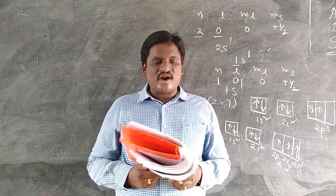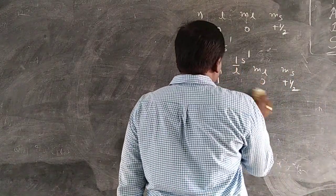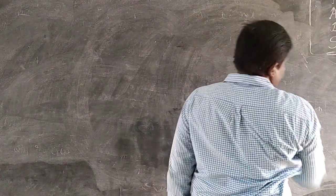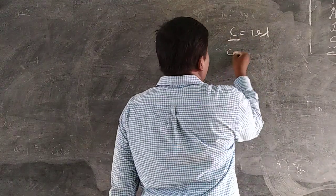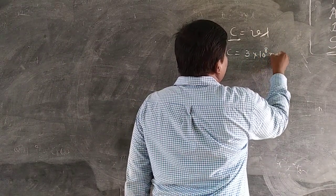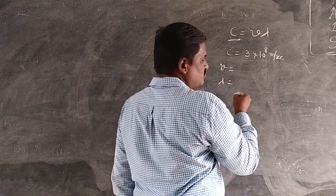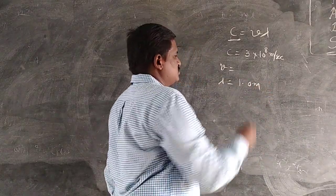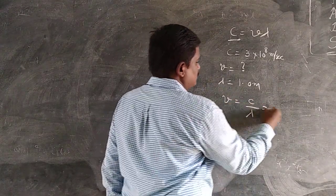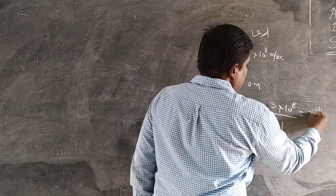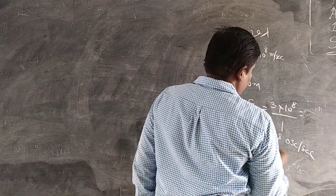The wavelength of a radio wave is 1 meter — find its frequency. The formula is C equals nu times lambda, where C is the velocity of light (3 × 10^8 m/s), nu is frequency, and lambda is wavelength. Given wavelength is 1 meter, so nu equals C divided by lambda equals 3 × 10^8 divided by 1, which equals 3 × 10^8 oscillations per second.